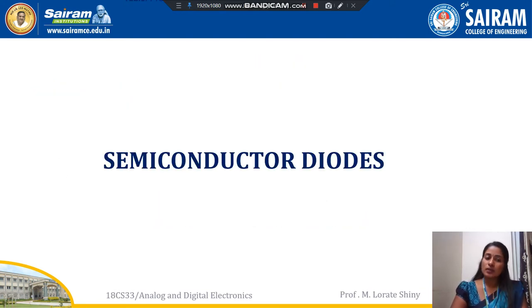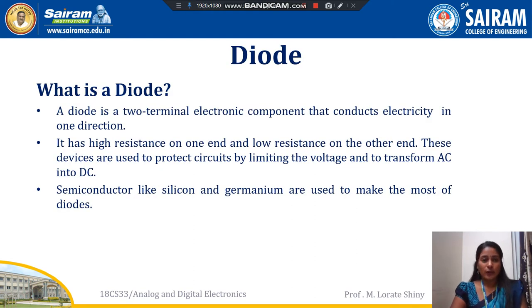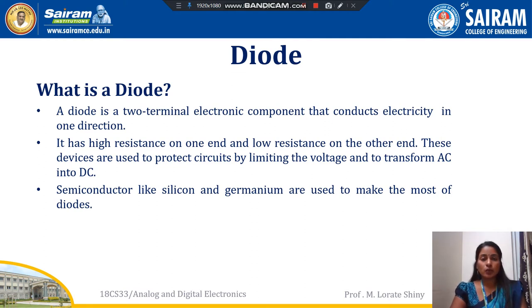Next we will move on to the sub-syllabus topic: semiconductor diodes. What is a diode? A diode is a two-terminal electronic component that conducts electricity in a single direction. It has high resistance on one side and low resistance on the other side. These devices are used to protect circuits by limiting voltage and also to transform AC to DC current. Hence it is called a rectifier. Semiconductor materials like silicon and germanium are used to make this diode.